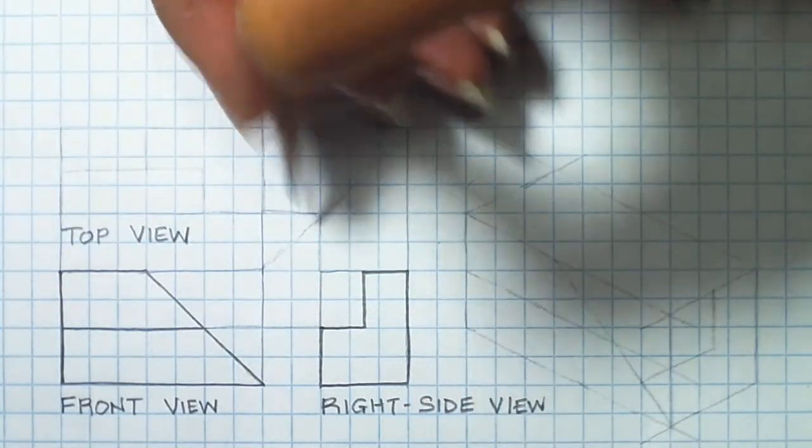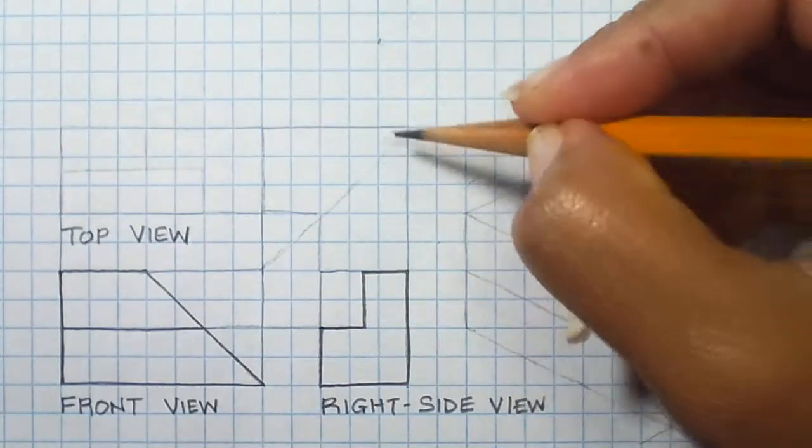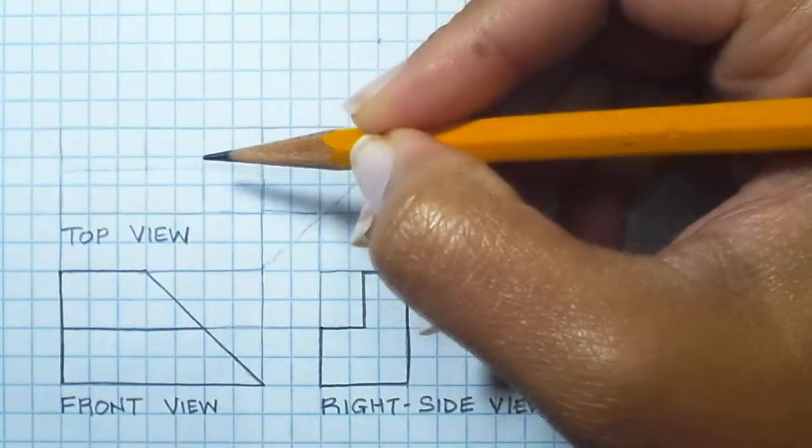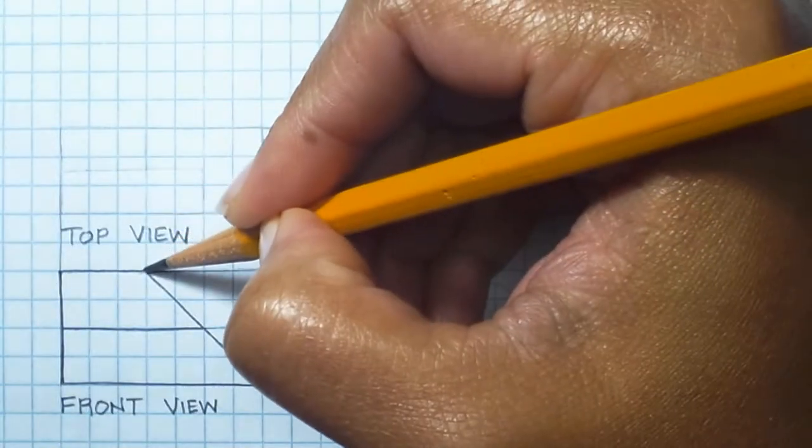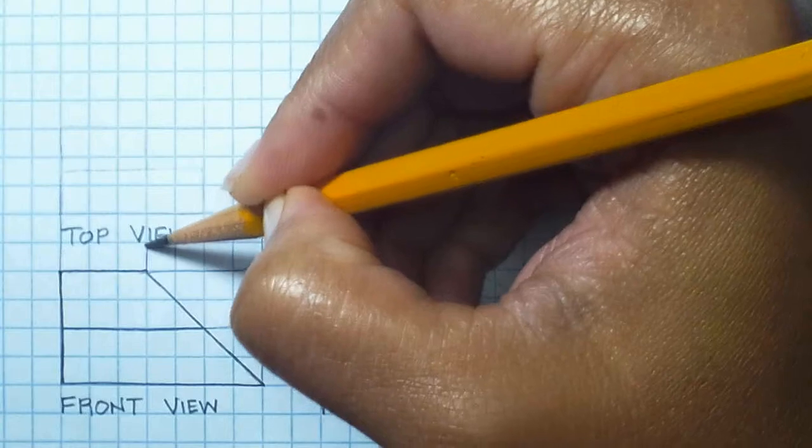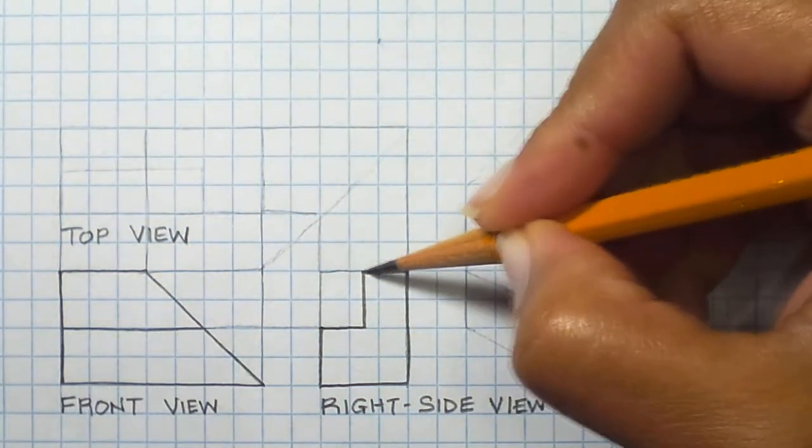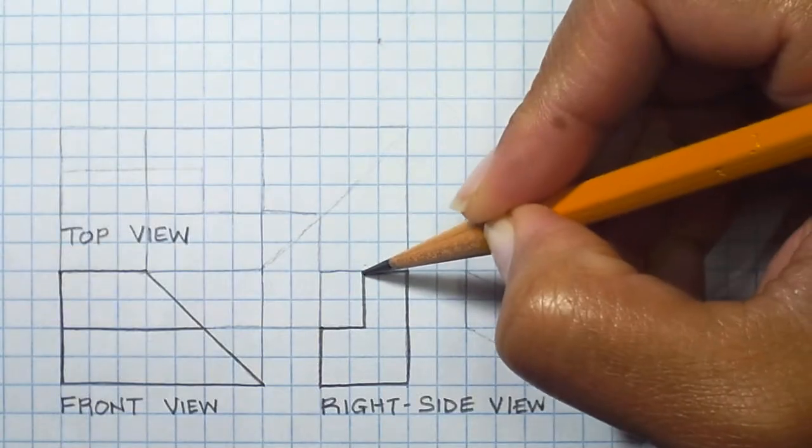my depth over. This is the placement for our top view. I'm going to carry this feature over. This gives me the width of the feature but this gives me the depth of the feature so I'm going to